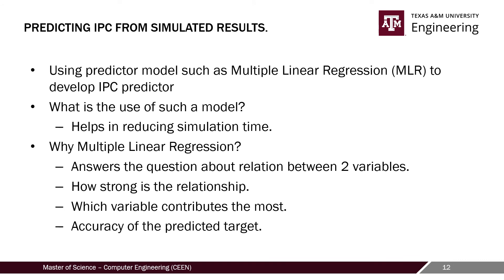Hello everyone, my name is Sanket Agarwal and I will walk you through the predictor model we built using multiple linear regression. As seen from the previous slides, we varied different parameters and observed the effect on IPC. While the simulated IPC may be accurate, it takes almost 5 to 8 hours to simulate any configuration. To reduce this effort, we built a predictor model using MLR. MLR works on least squares estimation, which helps answer the relationship between variables and also indicates how dominant any input is in determining the output.